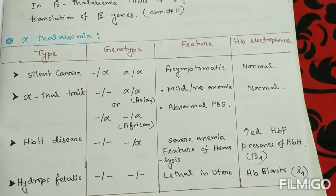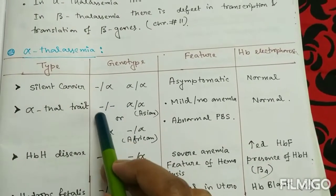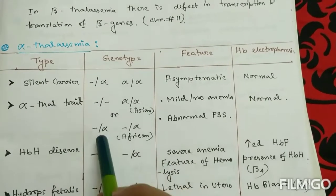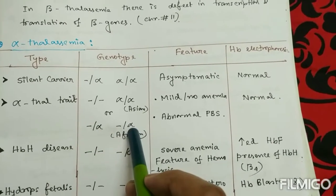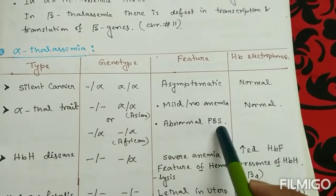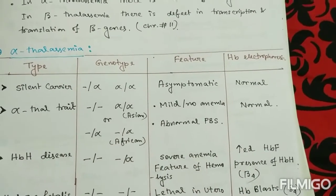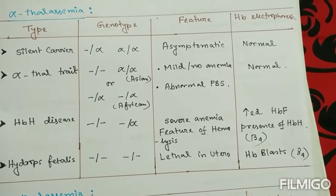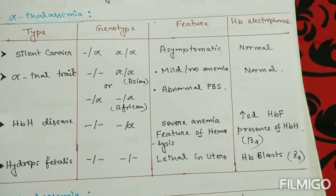In alpha thalassemia trait, two alleles are absent. In the Asian type, both absent alleles are in one locus (cis deletion); in the African type, one allele from one locus and another from a different locus are absent (trans deletion). The manifestations are mild or no anemia, some abnormalities may be found in the peripheral blood smear, and hemoglobin electrophoresis shows almost no abnormalities.